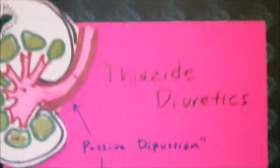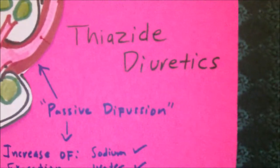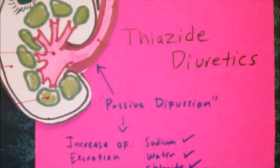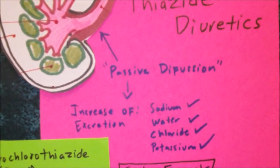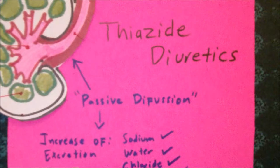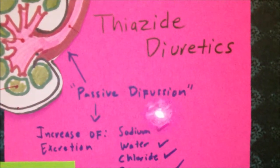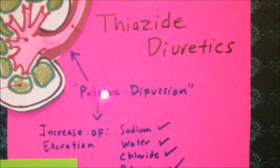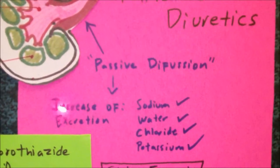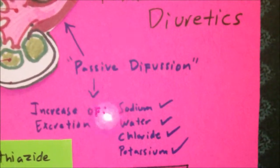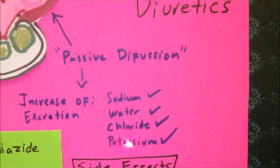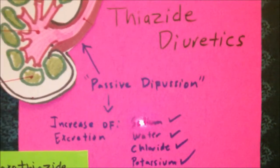Now let's talk about thiazide diuretics. With thiazide diuretics, there's an inhibition of sodium reabsorption in the portion of the distal tubule. It uses what they call passive diffusion. Basically, what it results in is an increase in excretion of sodium, water, and chloride from the body.